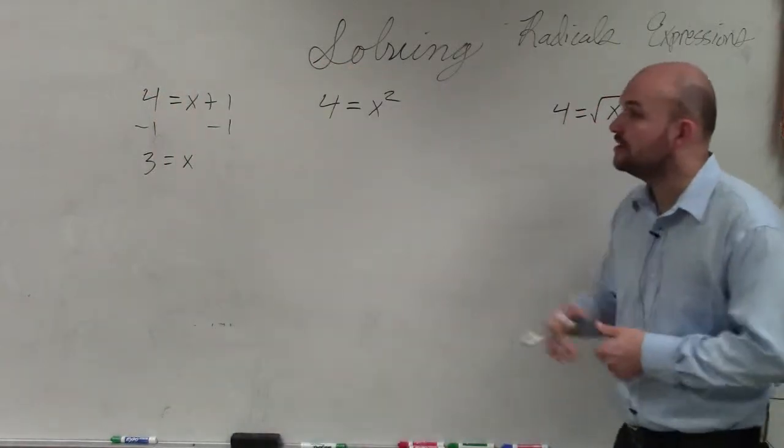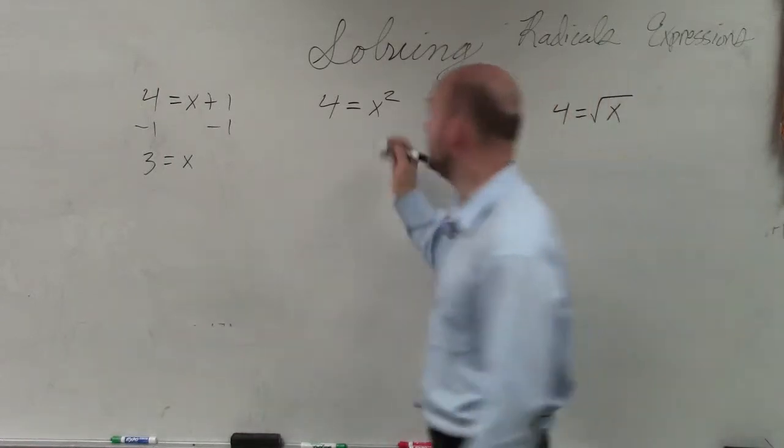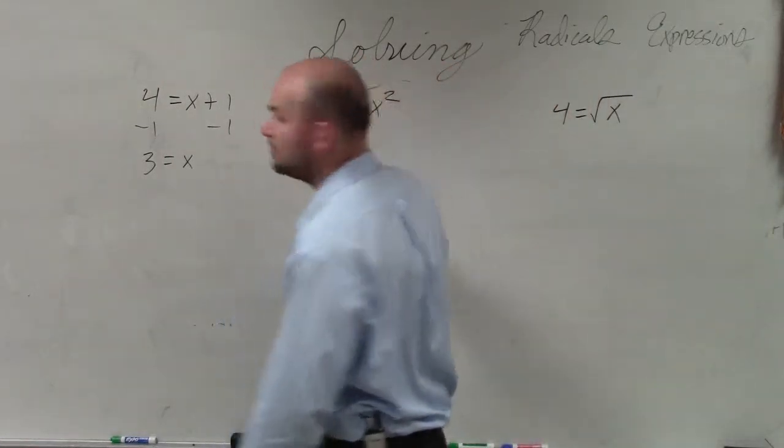That's solving one-step equations. Over here, we see that the x is being squared. So we undo the squaring, which would be taking the square root on both sides, right?